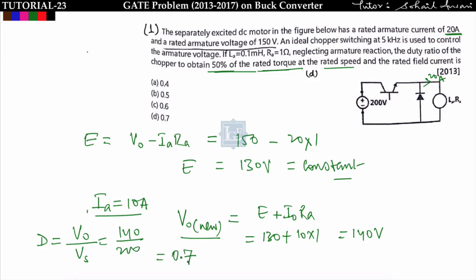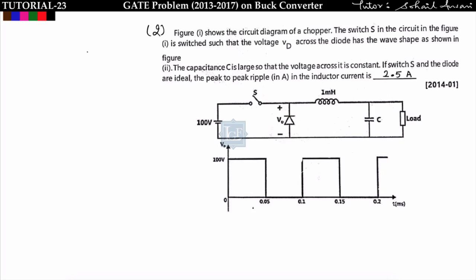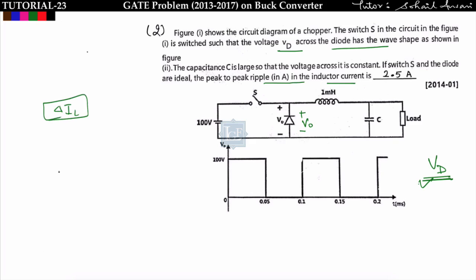The next problem: in a chopper circuit, the switch is switched such that the voltage Vd across the diode has a given waveform shape. The capacitance is so large that the voltage across it is constant. If the switch and diode are ideal, we have to find the peak-to-peak ripple in the inductor current, delta IL. To find delta IL, we find VL during the on condition, which is Vs minus V0.